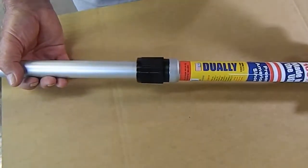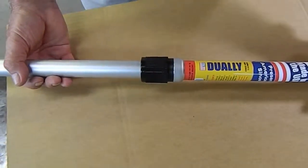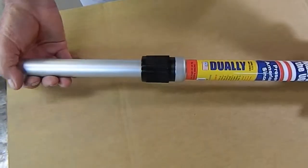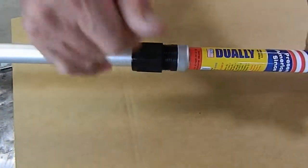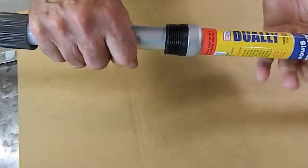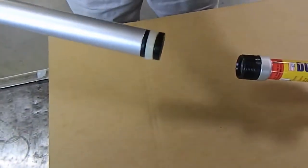To disassemble and reassemble Skimlite's internal locking series poles 5,000 or 9,000, simply take the pole, find the unlocked position, and pull the pole apart.